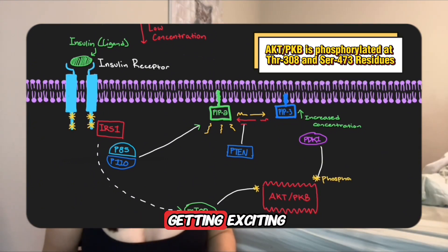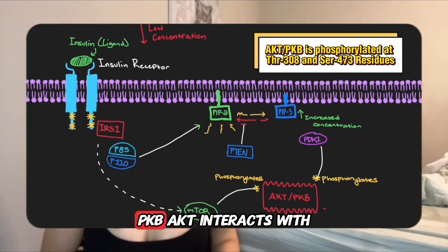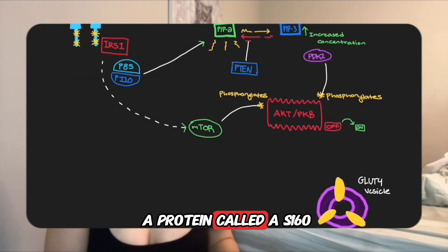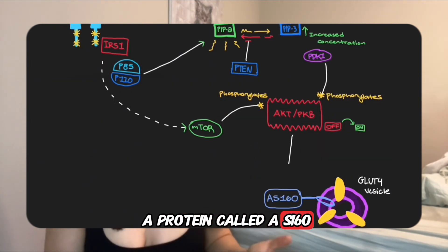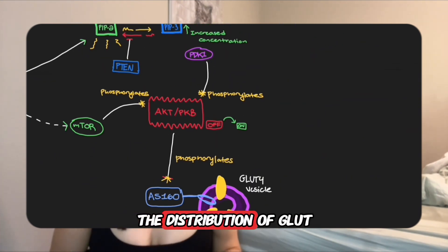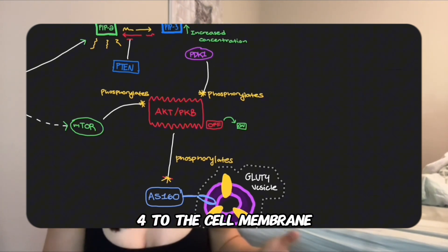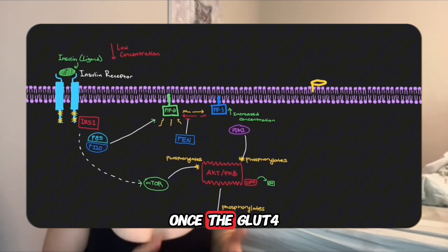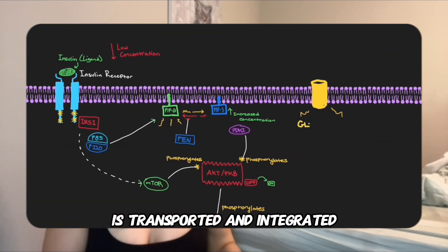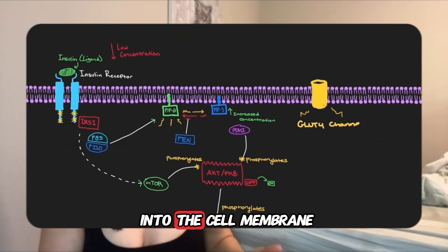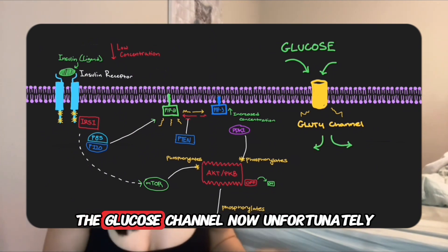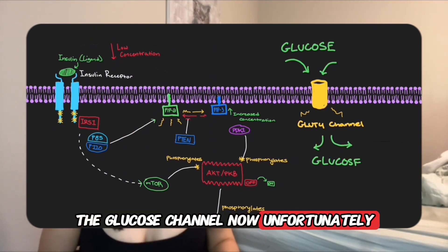From here, things start getting exciting. PKB-AKT interacts with a protein called AS160, the essential Rab-GAP involved in the distribution of GLUT4 to the cell membrane. Once the GLUT4 storage vesicle is transported and integrated into the cell membrane, glucose is shuttled into the cell via GLUT4, the glucose channel.